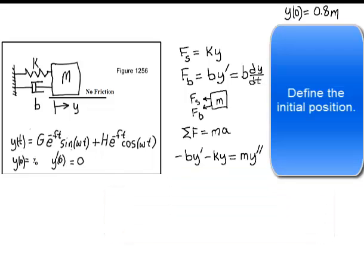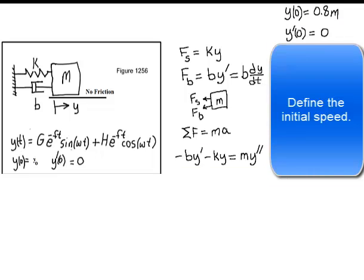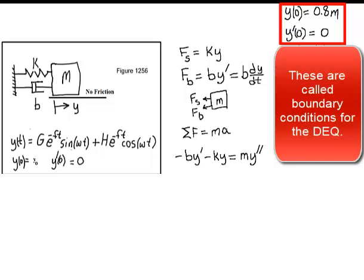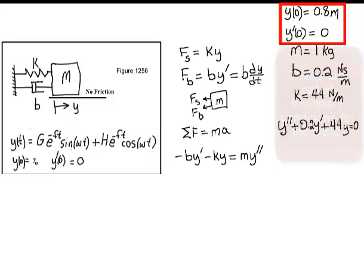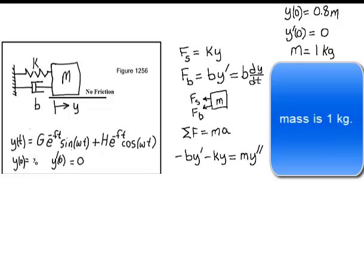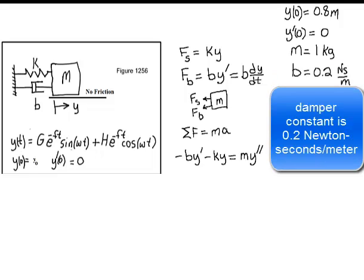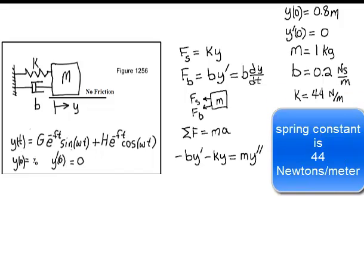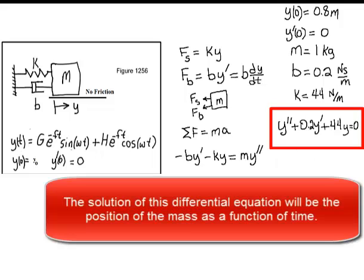Define the initial position and define the initial speed. These are called boundary conditions for the differential equation. Let the mass be one kilogram, the damper constant 0.2 newton seconds per meter, and the spring constant 44 newtons per meter. The solution of this differential equation will be the position of the mass as a function of time.